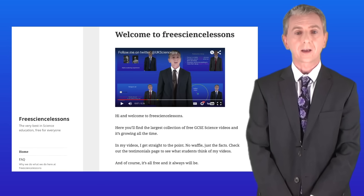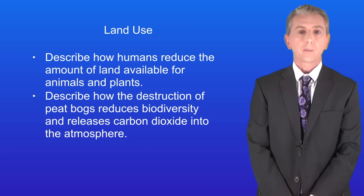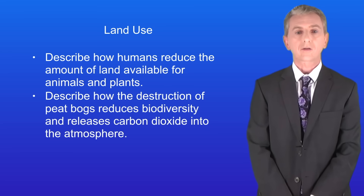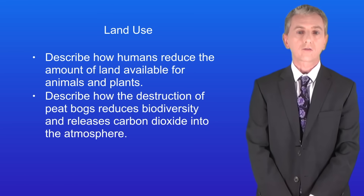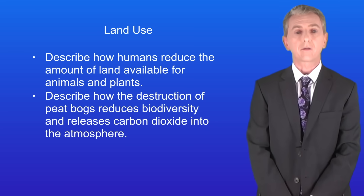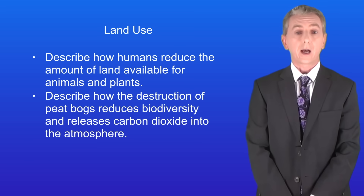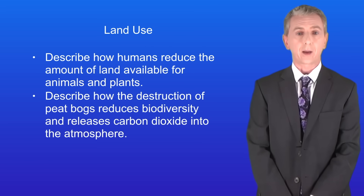Hi and welcome back to freesciencelessons.co.uk. By the end of this video you should be able to describe how humans reduce the amount of land available for animals and plants. You should then be able to describe how the destruction of peat bogs reduces biodiversity and releases carbon dioxide into the atmosphere.